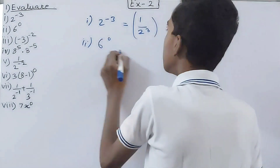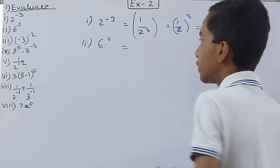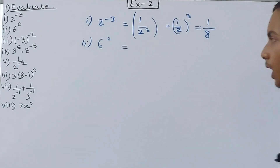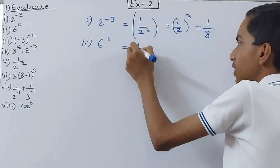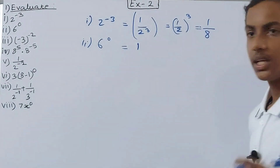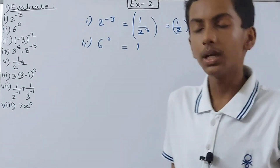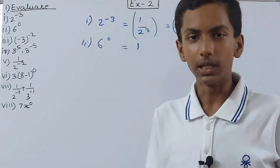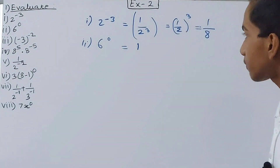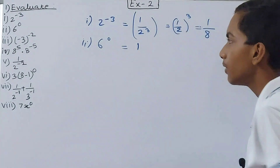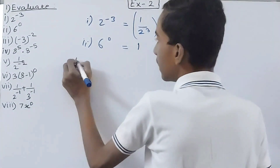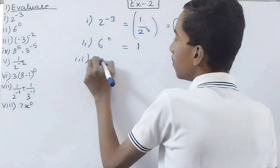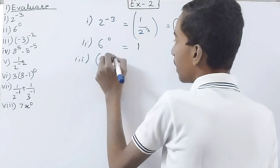Next we have 6 to the power 0. 6 to the power 0 is 1 — any number raised to the power 0 is always 1.